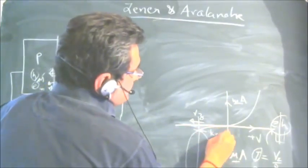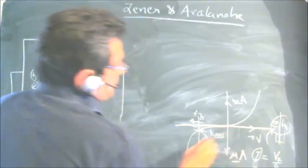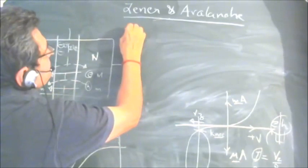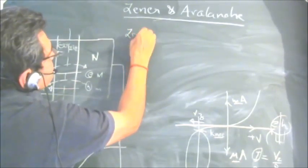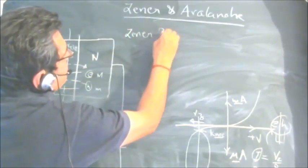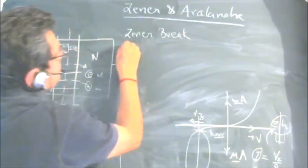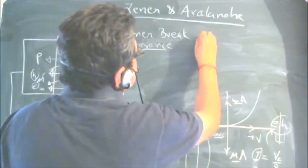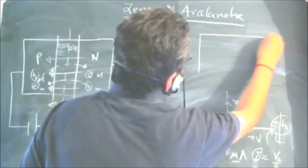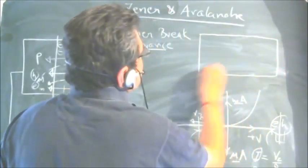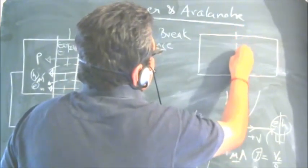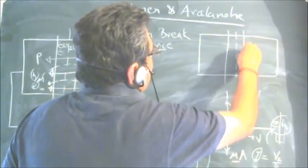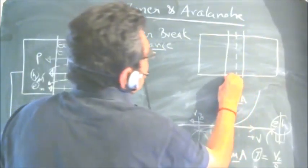This breakdown happens because of two things: one is zener breakdown and another is avalanche breakdown. In zener breakdown, a high electric field is created because of a very thin depletion region and because of very heavy doping.